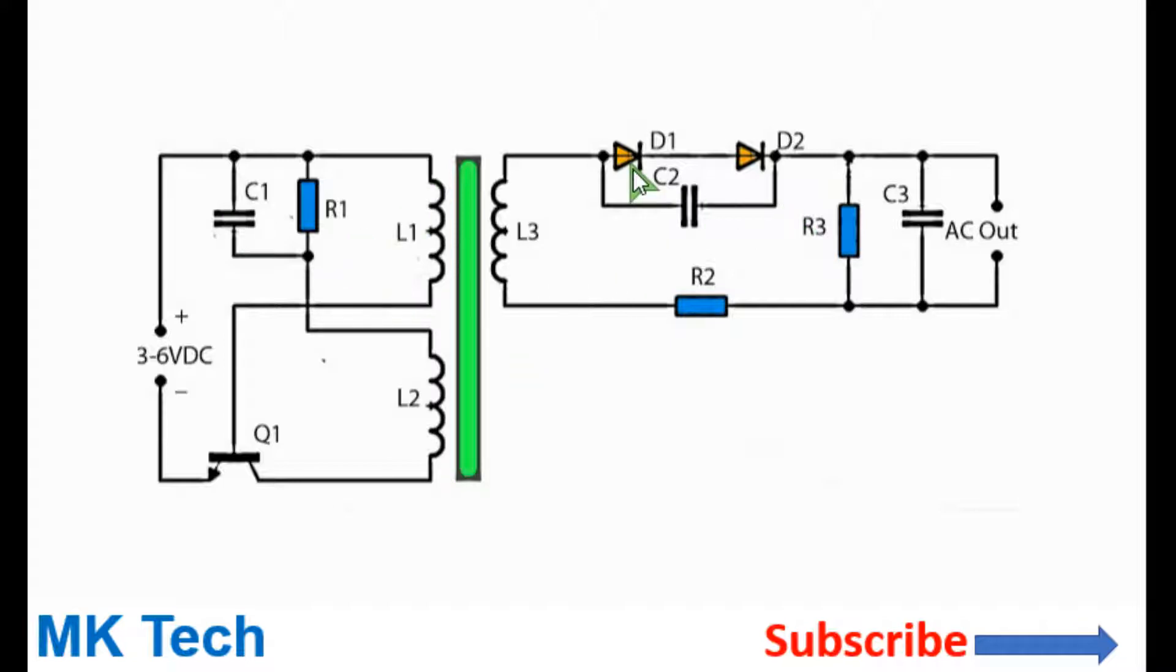On the secondary side these are rectifier diodes which are rated at 1000 volts each. You can use the FR-107, they are good diodes. You can even use any other high voltage diodes if you have one.